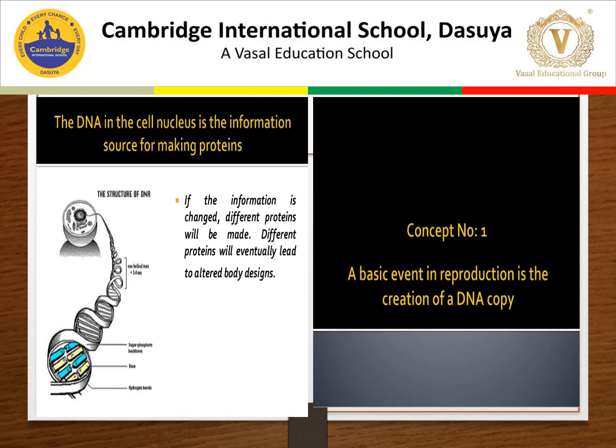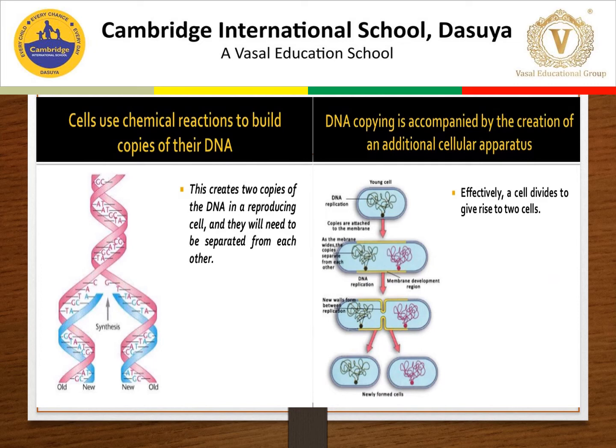For transmitting characters to the next generation, DNA transfers its properties to newly formed cells. DNA in the cell is the information source for making proteins. If information is changed, different proteins will be formed, and different proteins will lead to a different body design. The basic event in reproduction is the creation of DNA copies through DNA replication. During DNA replication, DNA forms an exact copy of itself, but mistakes can occur. These changes are called mutations, and the cells receiving copies of DNA from parent cells have certain variations.